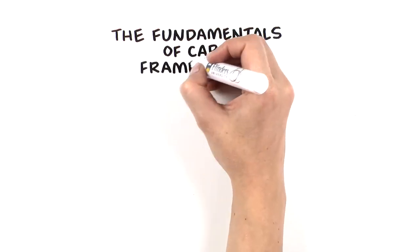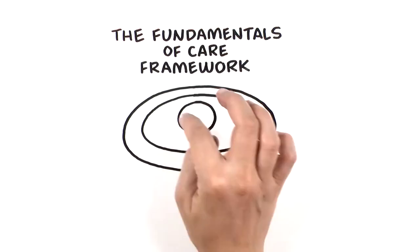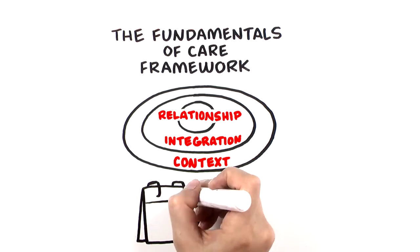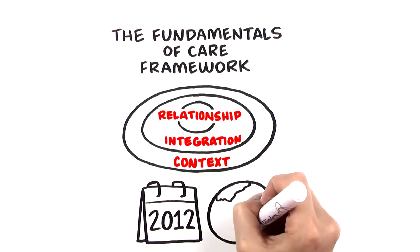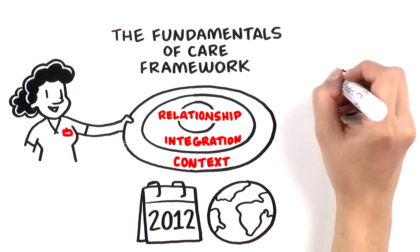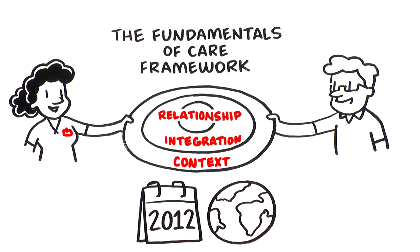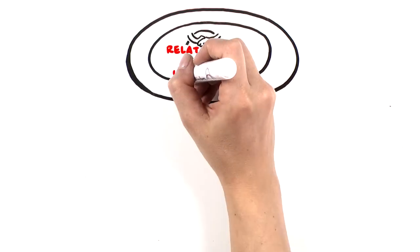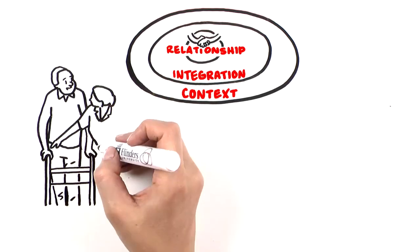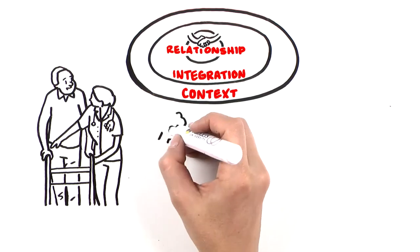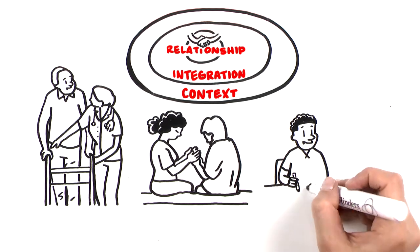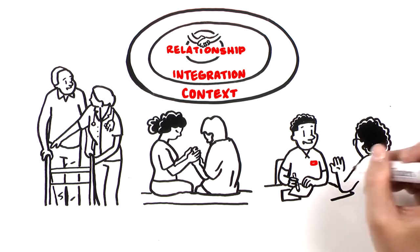The Fundamentals of Care framework describes how best to deliver relationship-based, integrated fundamental care. Since being developed in 2012 by an international collaborative, nursing leaders and consumers have been working together to apply the framework to practice. It is about building relationships and developing trust. It integrates all components of care — physical, psychosocial and relational needs — within a larger context, whether in an acute ward, an aged care facility or in a person's own home.